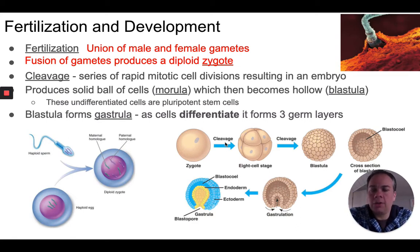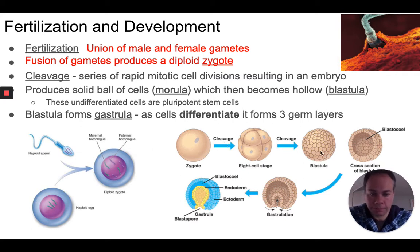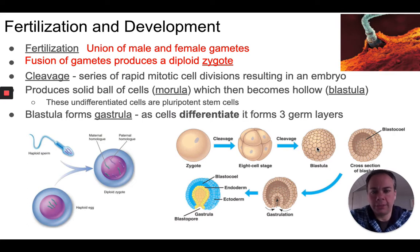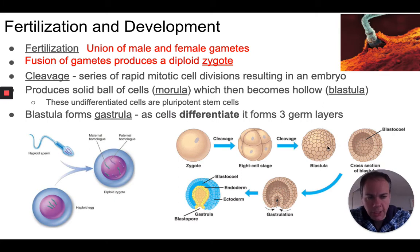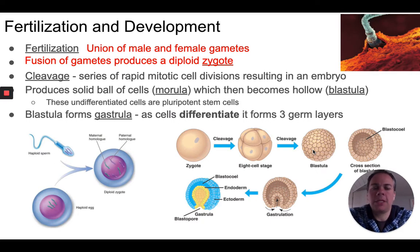This process of rapid cell division is called cleavage — the word meaning to divide in two. Those first rapid cell divisions form a little solid ball of cells called the morula. It then starts to form a hollow ball of cells called the blastula. The cells in the blastula are undifferentiated — each cell is identical to the others, carrying the same chromosomes and genetic information, and they have not yet differentiated.